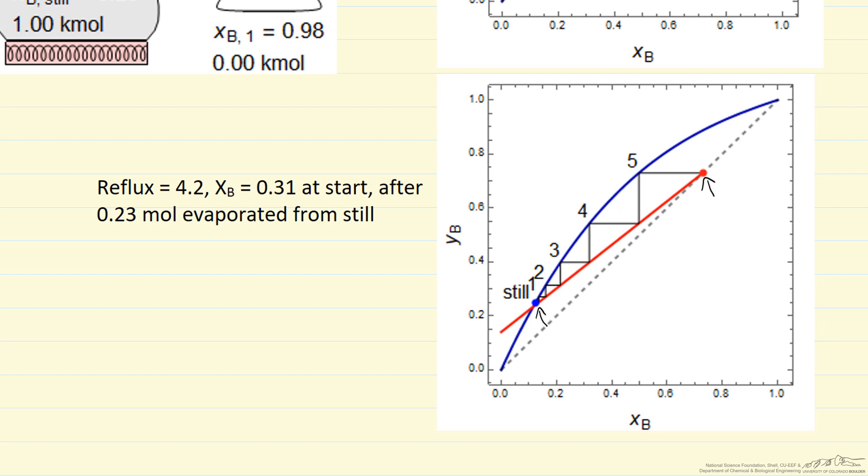Now, of course, if we increase the reflux ratio, then it means the process is slower since we're sending more back into the column and only collecting a smaller amount. Now, these columns can be operated where the reflux ratio is constant. That's essentially what I'm showing here.